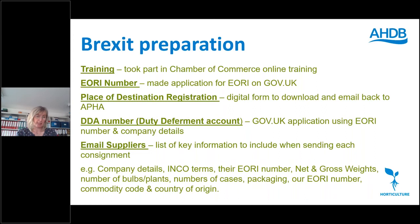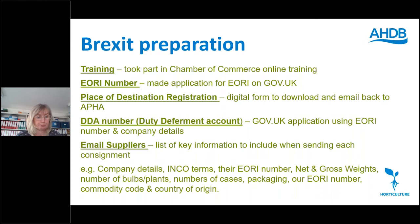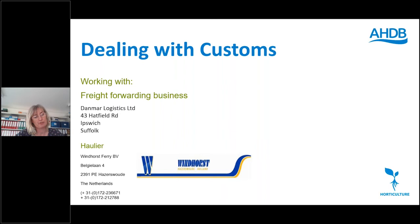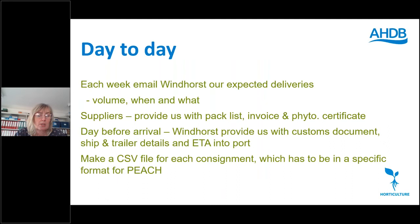Once we knew what was needed, we emailed all our mainly Dutch suppliers with a list of key information required with each consignment, to avoid holdups at port. This includes company details, INCO terms, their EORI number, net and gross weights, number of bulbs or plants, number of cases, packaging type, our EORI number, the commodity code and country of origin. We work with Danmar Logistics in Ipswich as our freight forwarder, working closely with our haulier Vindhorse BV. Danmar arranges customs at around £35 per consignment.